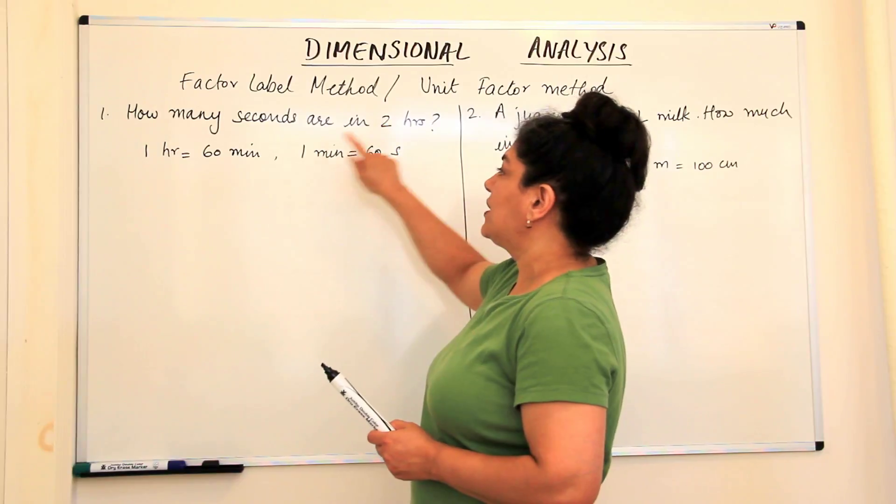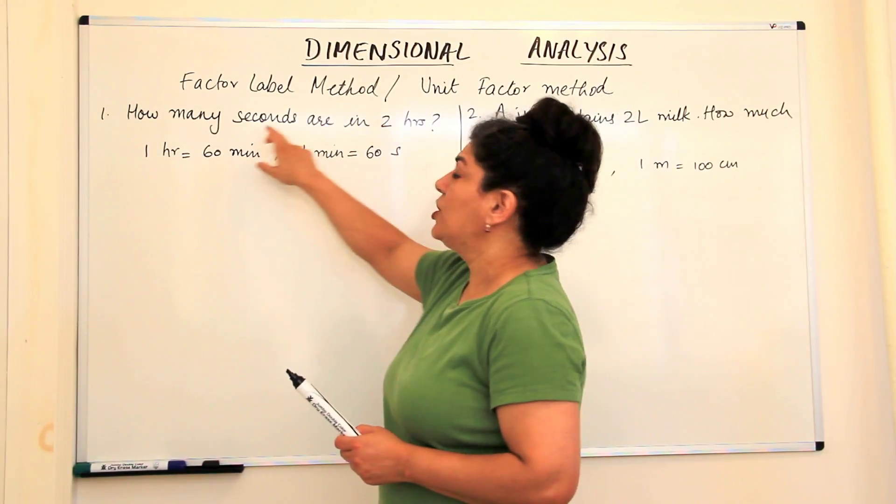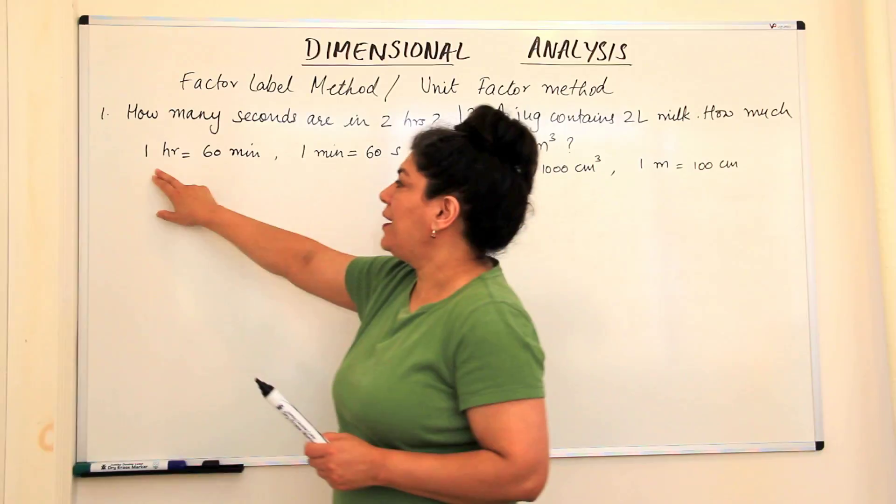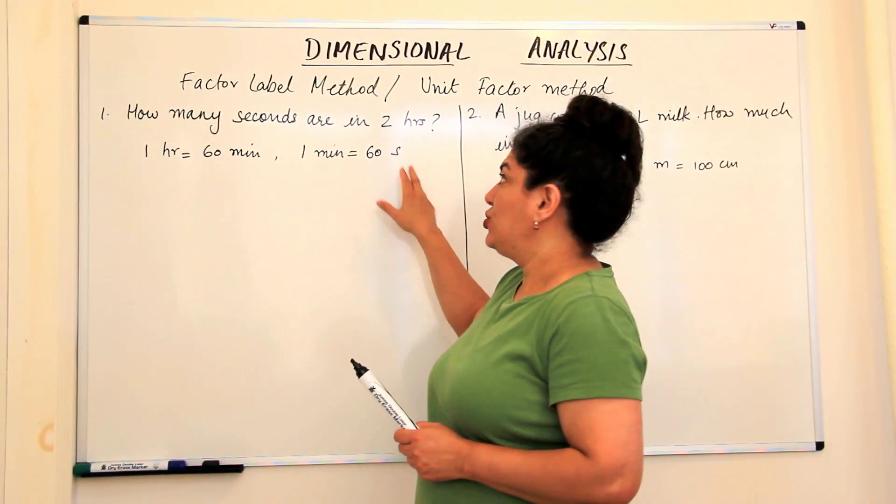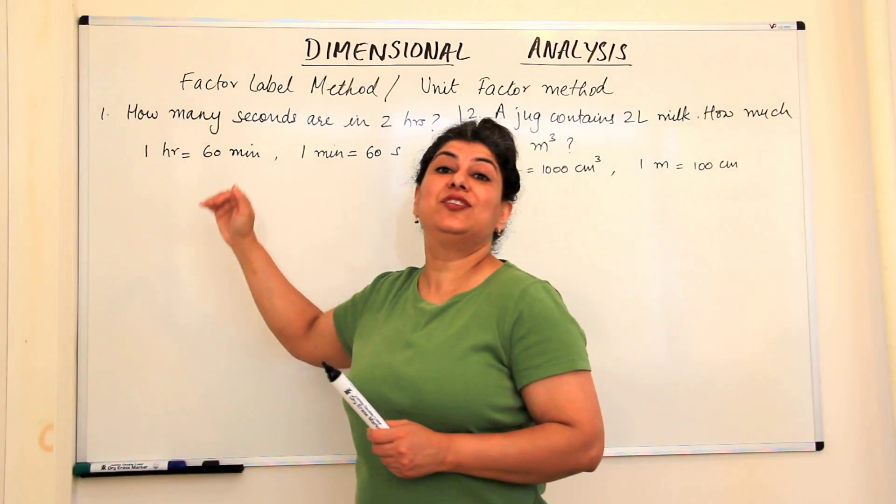There's no direct conversion between hours to seconds. We find that one hour is 60 minutes and one minute is 60 seconds. So this conversion will take place in two steps.